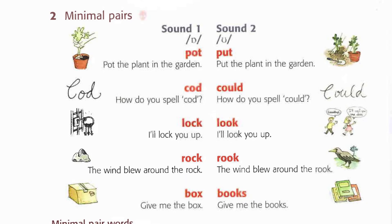2C: Pot the plant in the garden. Put the plant in the garden. How do you spell cod? I'll lock you up. I'll look you up. The wind blew around the rock. The wind blew around the rook. Give me the box. Give me the books.